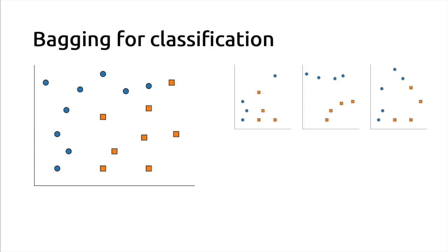In particular, we will start with the classification case. Let's consider this small toy dataset where we have two input features, x0 and x1, and the target variable is represented, as usual, with the colors and the shape of the dots. We have two groups and we want to classify, based on the position, whether or not a new point should be blue or orange.